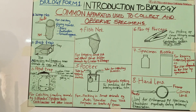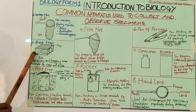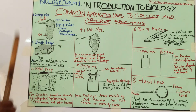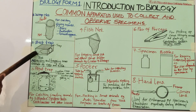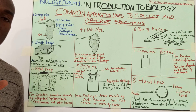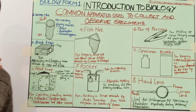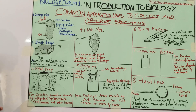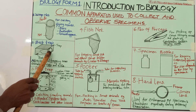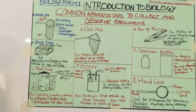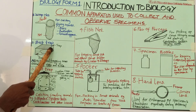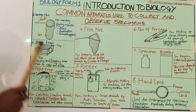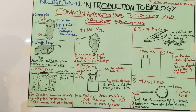Number two is the bait trap. As you can see in the diagram, there is a bait at this corner here. A bait is something like a food substance that is going to attract the specimen you want to trap. There is a hole through which the specimen will enter, and when the specimen enters it will be unable to get out.